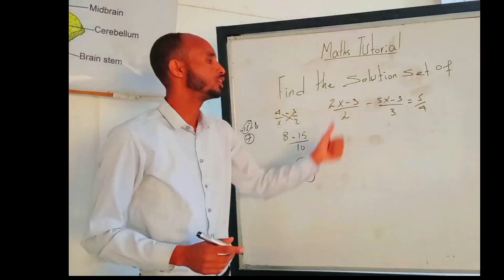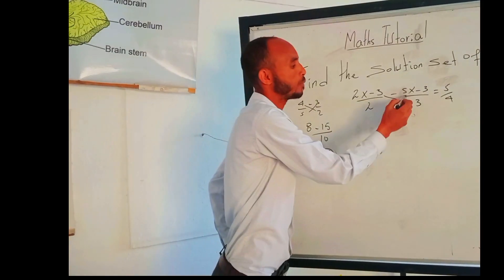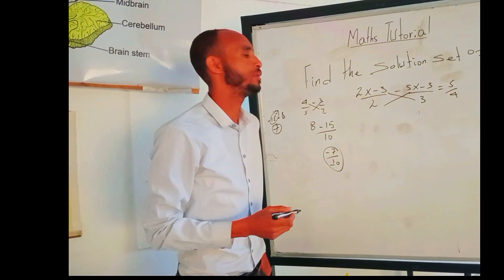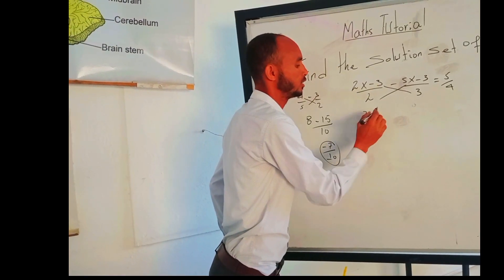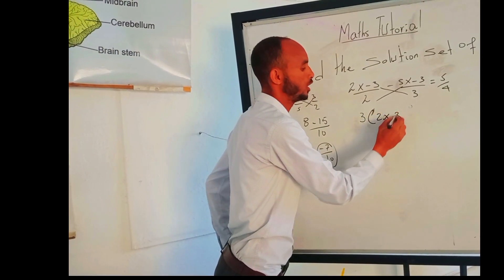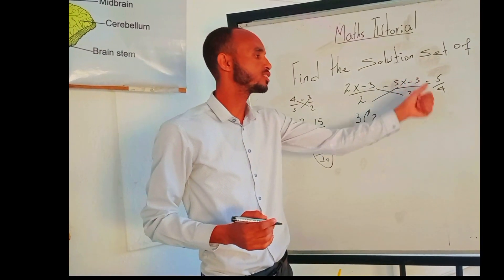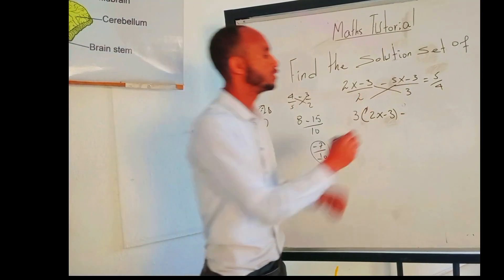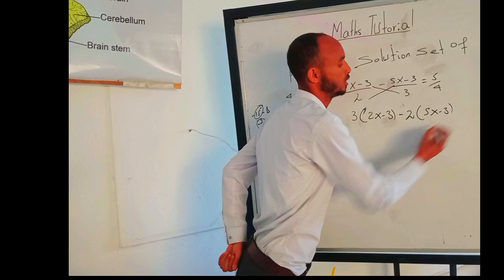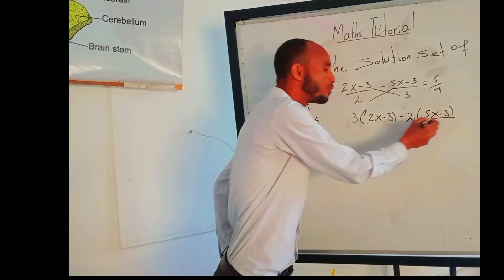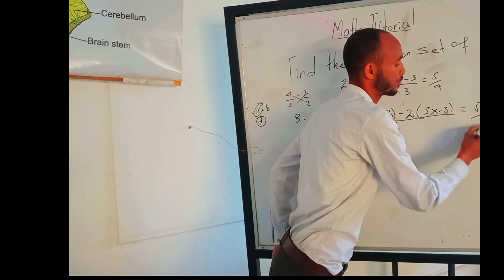Now, let us come to our equation: (2x - 3)/2 - (5x - 3)/3. To apply cross-product method, close the bracket, open the bracket here and then 2x minus 3, this multiplied by 3. Put negative sign and then 2 times (5x - 3). The whole over 6 gives us 5/4.